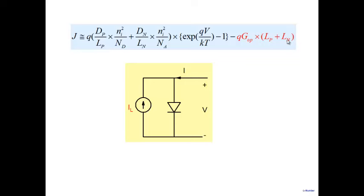Unlike thermal generation, optical generation rate is the same everywhere — inside and outside the depletion region. Since the depletion region (~300–400 nm) is much thinner than the diffusion lengths (~20–30 μm), generation within the depletion region is negligible for optical generation. That is why the total photocurrent is Q·GOP·(LP + LN), not including the thin depletion region contribution.